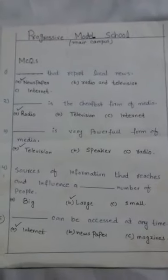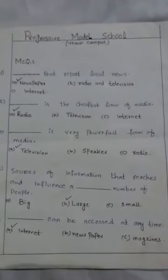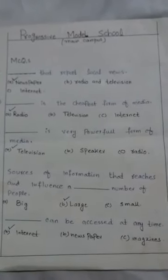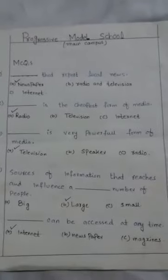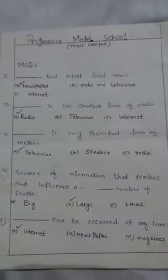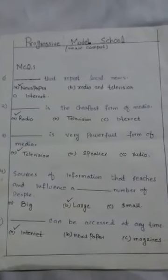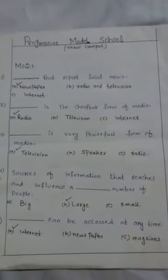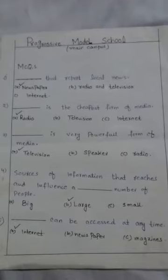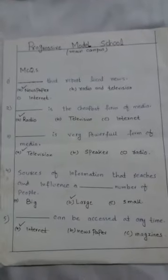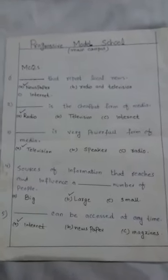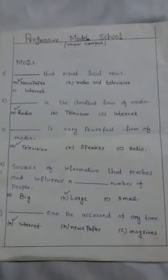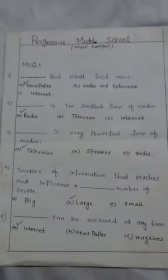Number 3: Dash is a very powerful form of media — options are Television, Speaker, Radio. The right answer is Television. Number 4: Source of information that reaches and influences a Dash number of people — options are Big, Large, Small. The right answer is Large. Number 5: Dash can be accessed at any time — options are Internet, Newspaper, Magazines. The right answer is Internet.